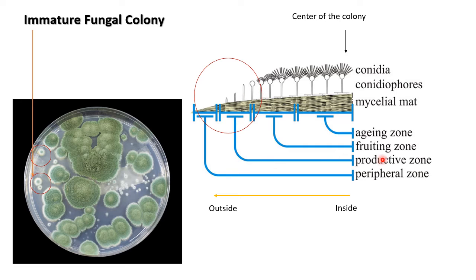After that comes the reproductive zone, which will show white mycelial growth. Here there are no conidia present — only the conidiophore is developing and there is a mycelial mat present. So this is the white cottony part observed towards the periphery of your colony, while the inside is the part that is matured and has conidiophores that are fully matured or still maturing their conidia.